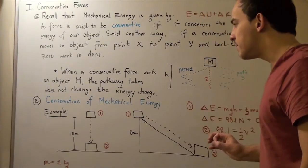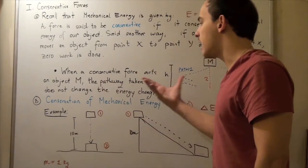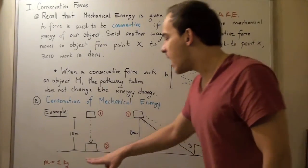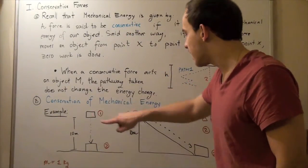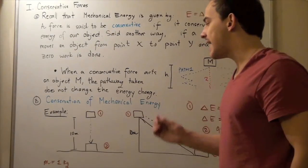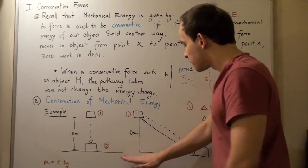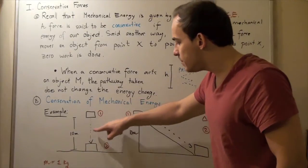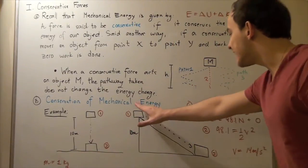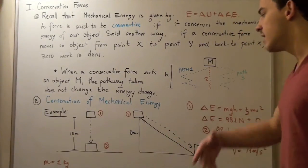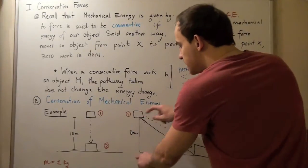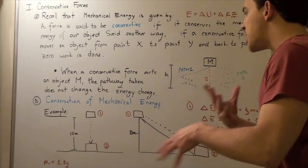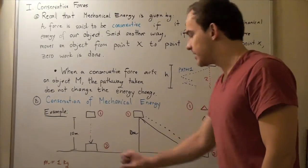Let's look at an example that shows conservation of mechanical energy. Suppose we have two systems, both with a mass of one kilogram, and in each case they begin ten meters above the ground. In the first case, the object is moved by a conservative force ten meters straight down to the ground. In the second case, the object slides down an incline at some angle theta, moving down a height of ten meters — ending at the ground just like the first object.